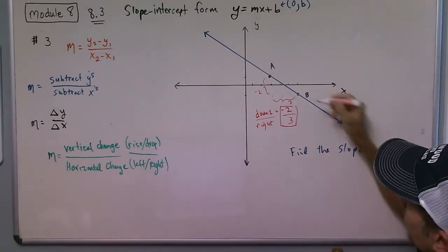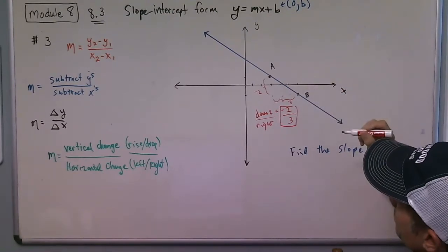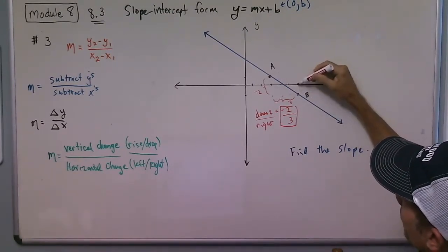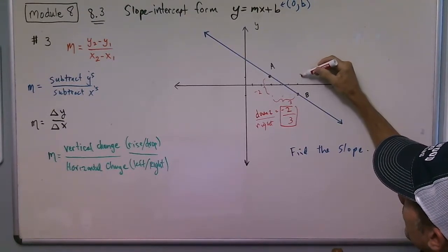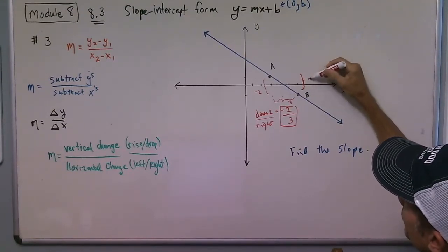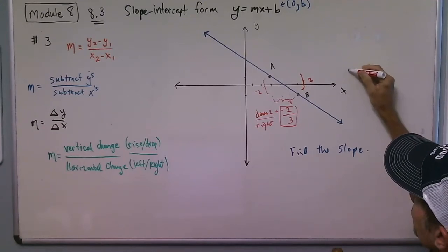Now if another student said, well, that's not what I did. I started at B. And from B to A, I go up 1, 2, so up 2. The vertical change is 2.